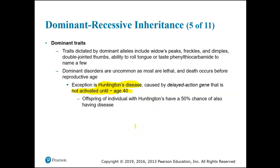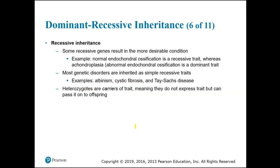So the offspring of an individual with Huntington's will have a 50% chance of having Huntington's. Any child of an individual with Huntington's will have a 50% chance of having it.